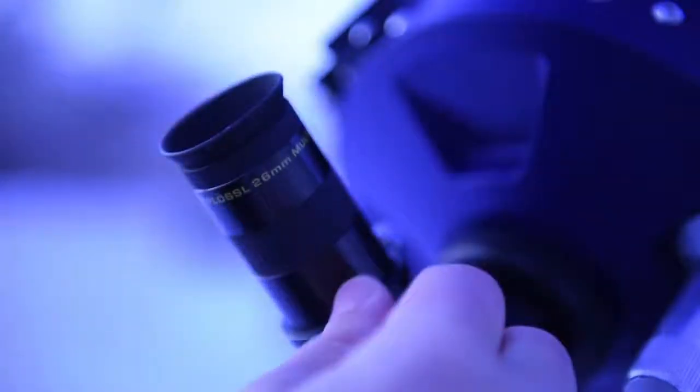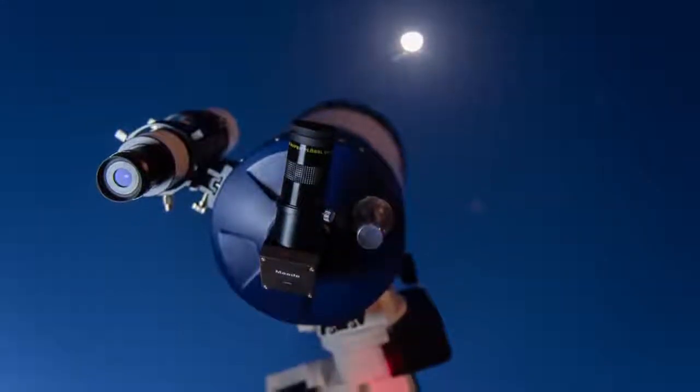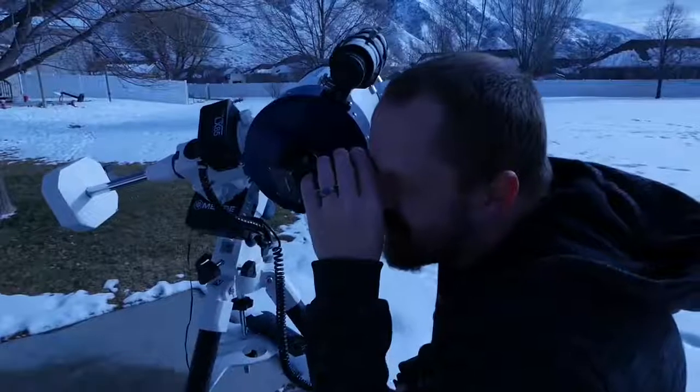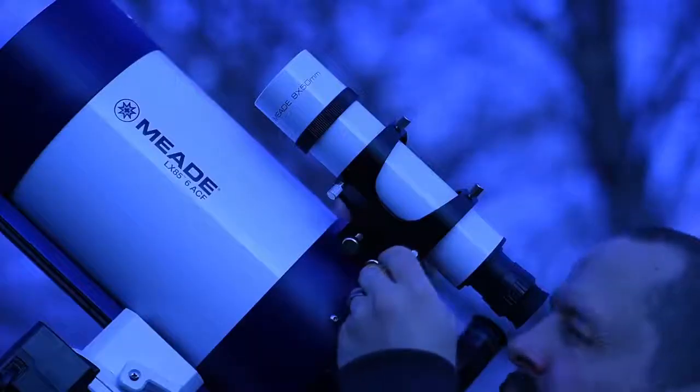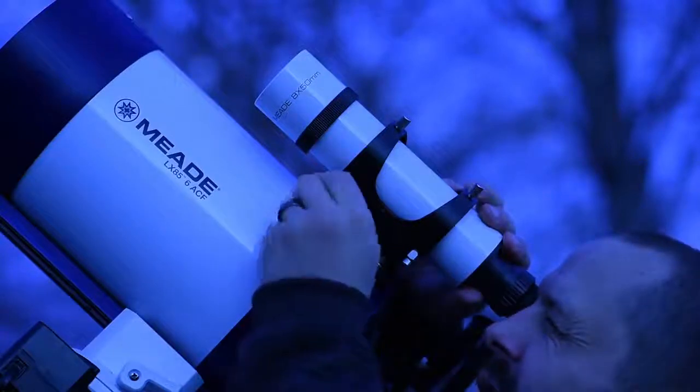Using the 26 millimeter eyepiece, locate an object at least a thousand yards away during the day or a bright object like the moon at night. Center the object in your eyepiece. Now, look through the finder scope. The object will be away from the center point of the crosshairs.